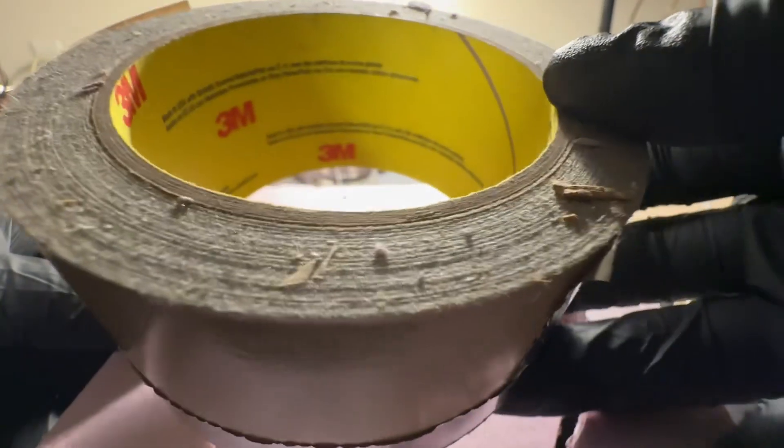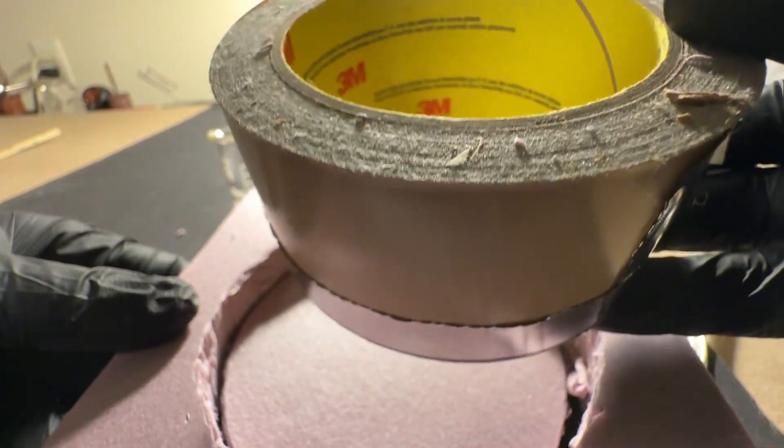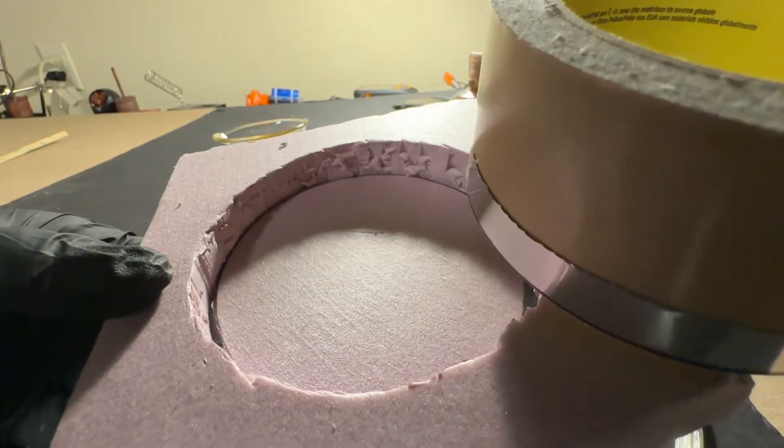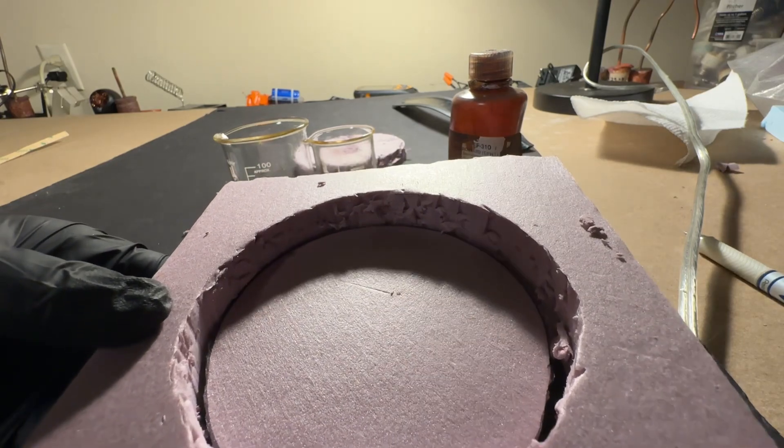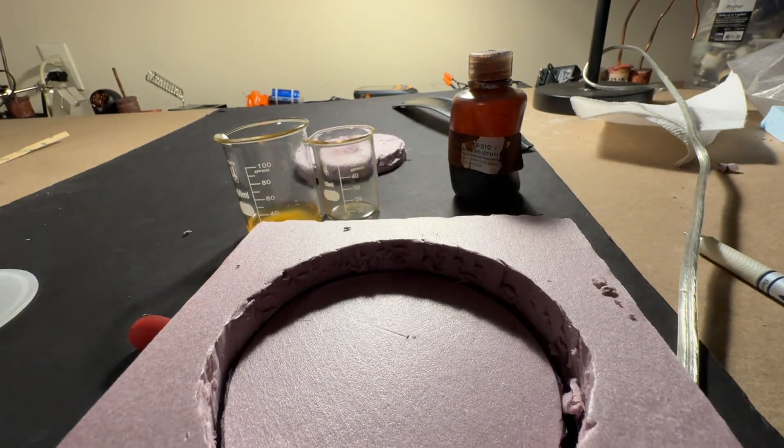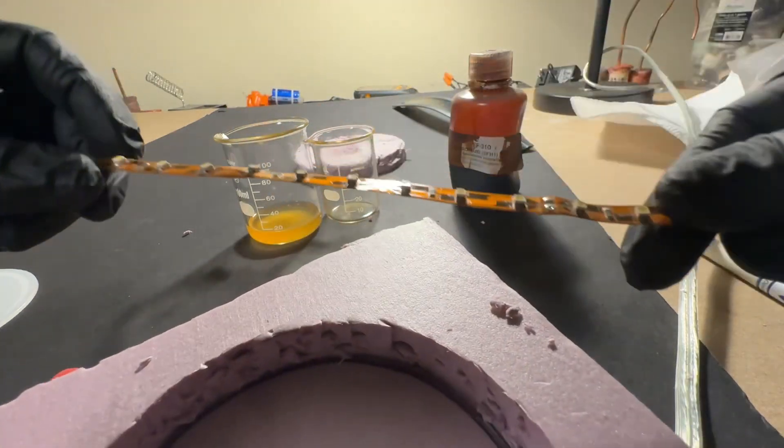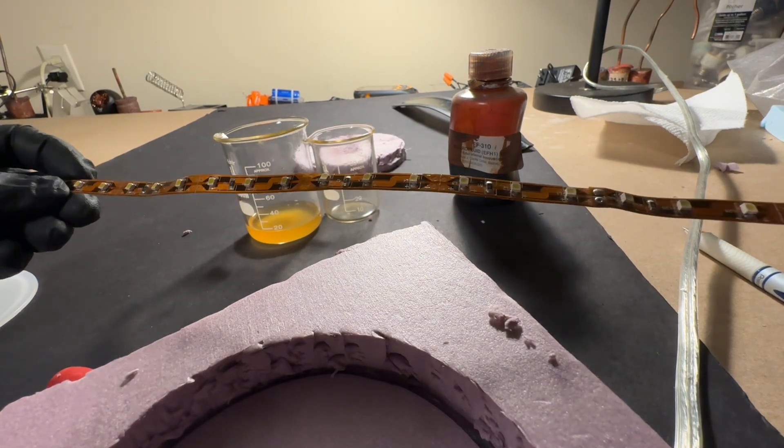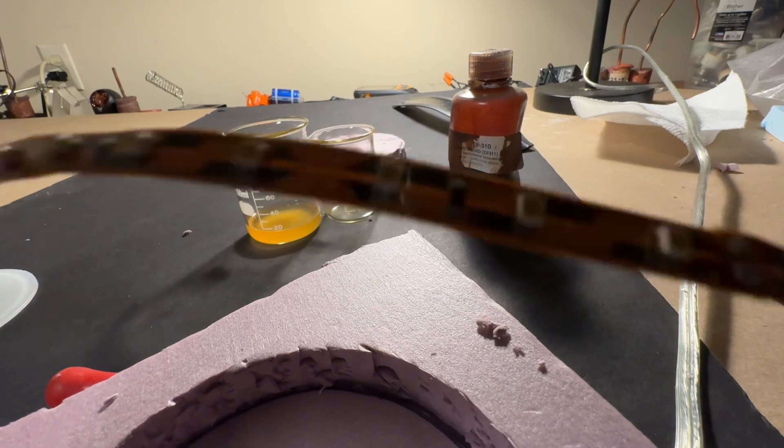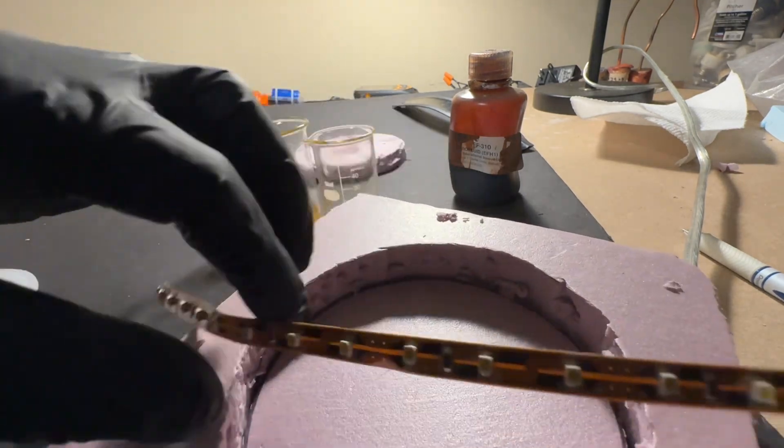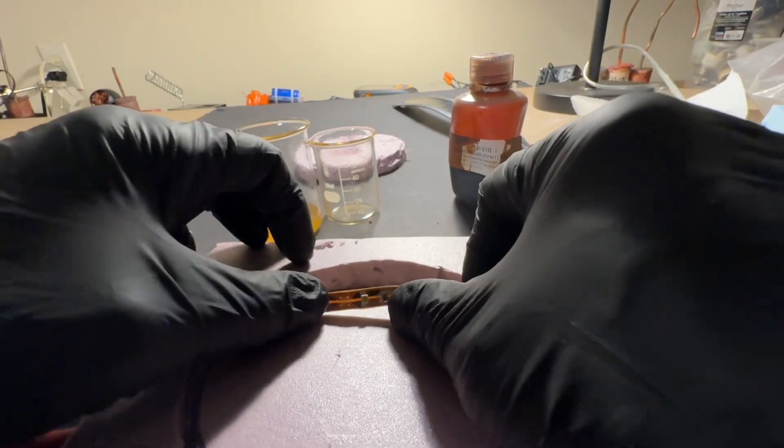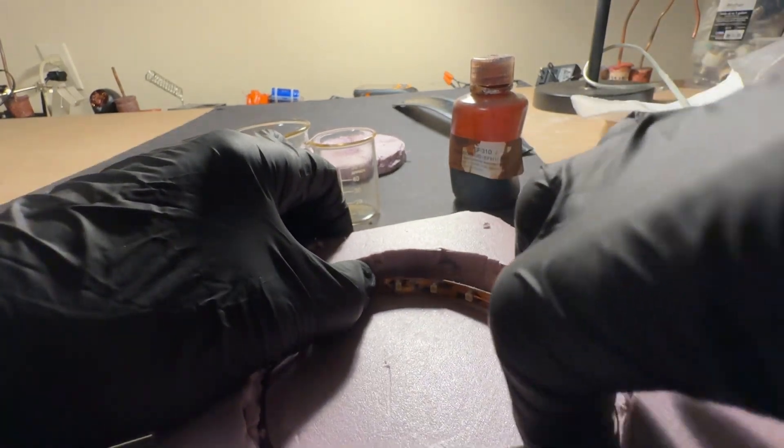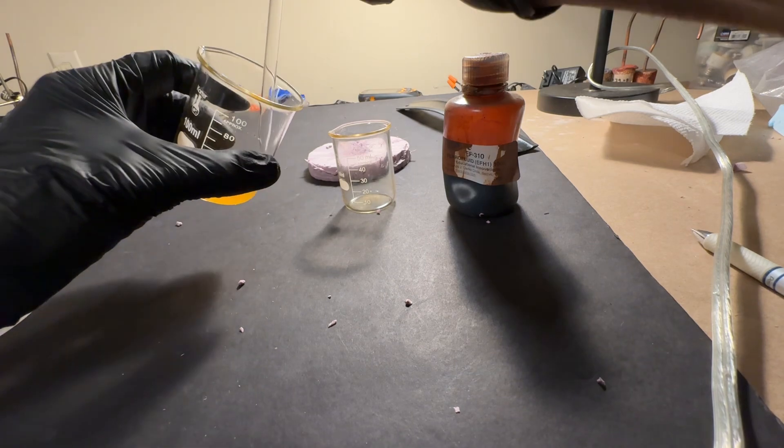You can get that from any hardware store and I use 3M adhesive aluminum tape. You just basically wrap it around the edges and create a smooth surface because you're going to need that smooth surface to put on your LED lights. You can get these LED strip lights, they come like this and they have an adhesive backing on them.